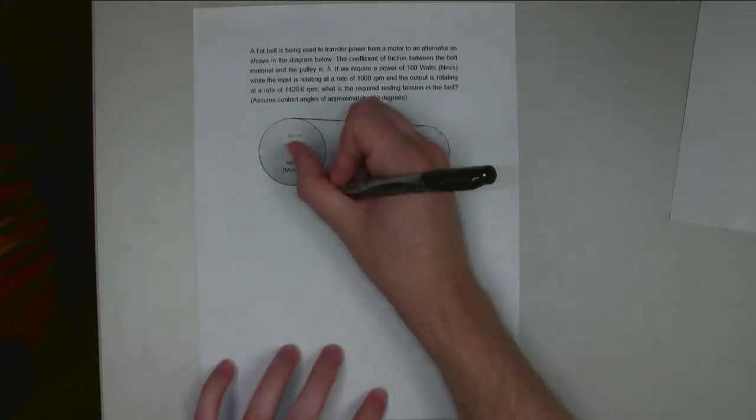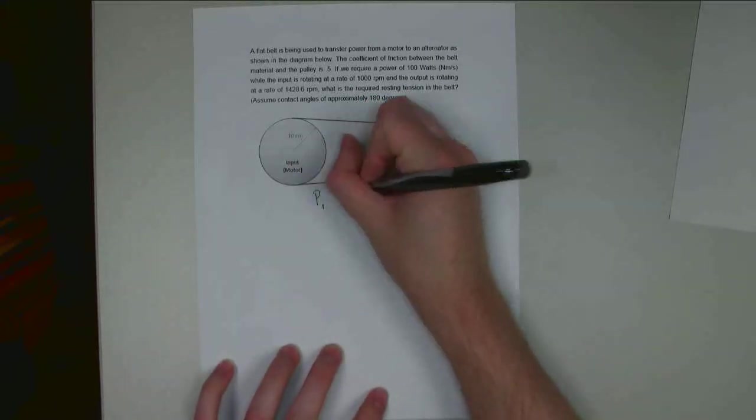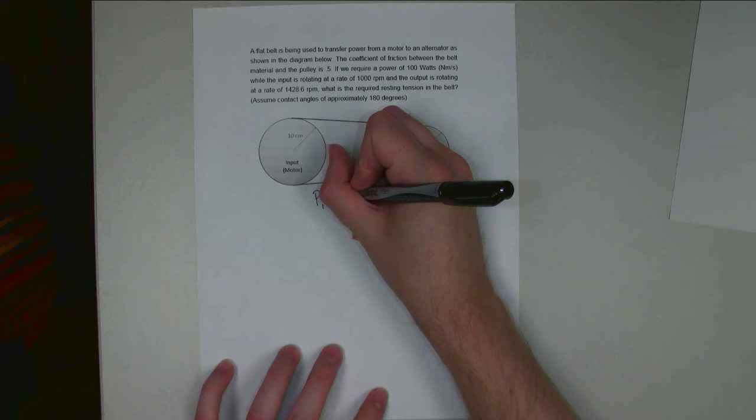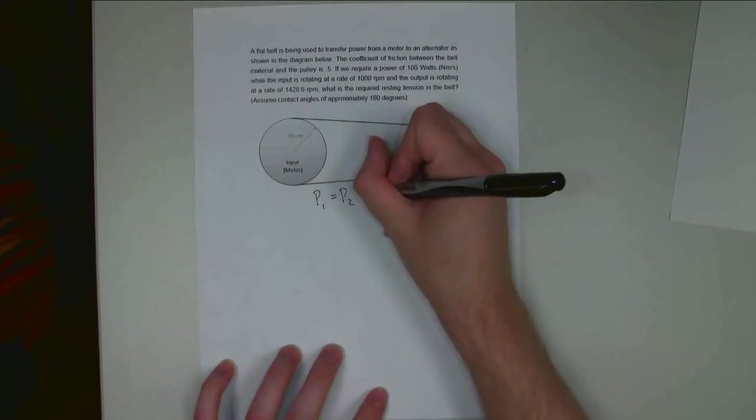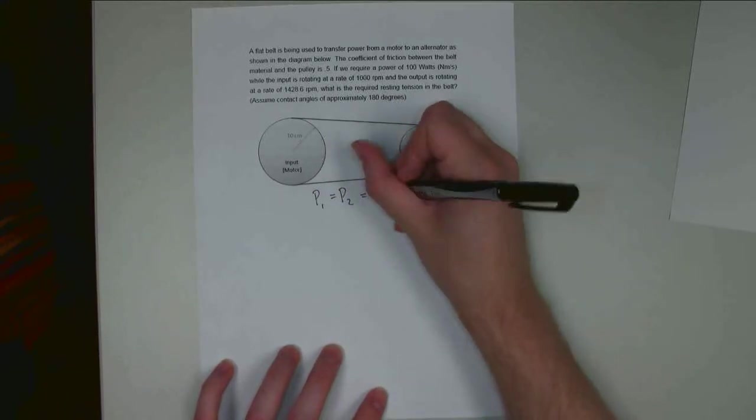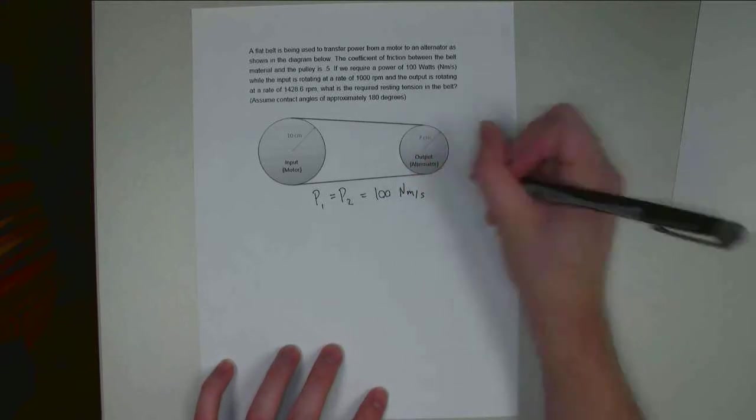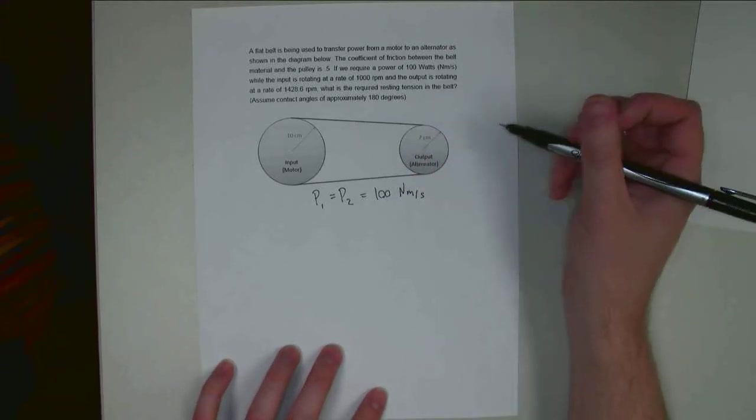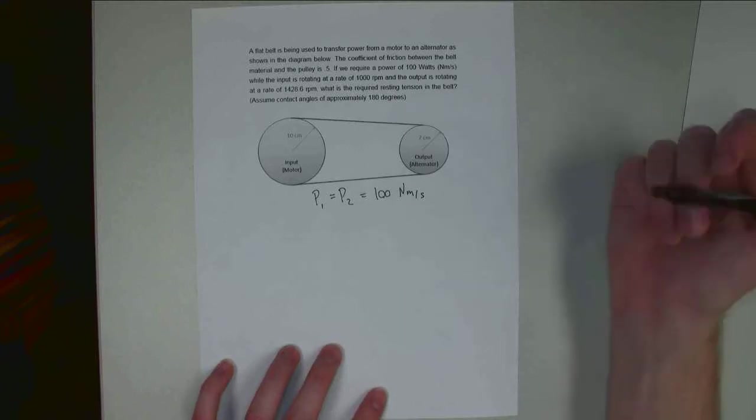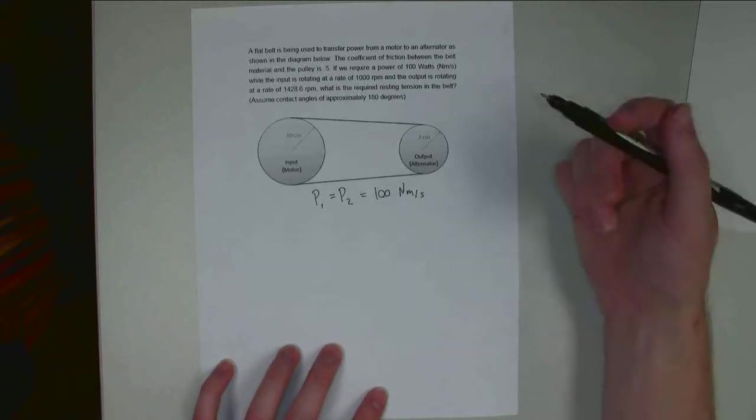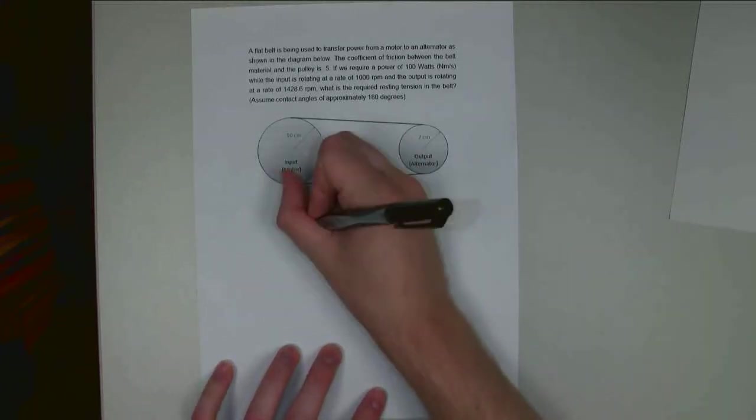So let's write some variables down. I know the power at the input, P1, is equal to the power at the output, P2, and that is 100 newton meters per second. I also want to find omega 1 and omega 2, the angular velocity at the input and the output.